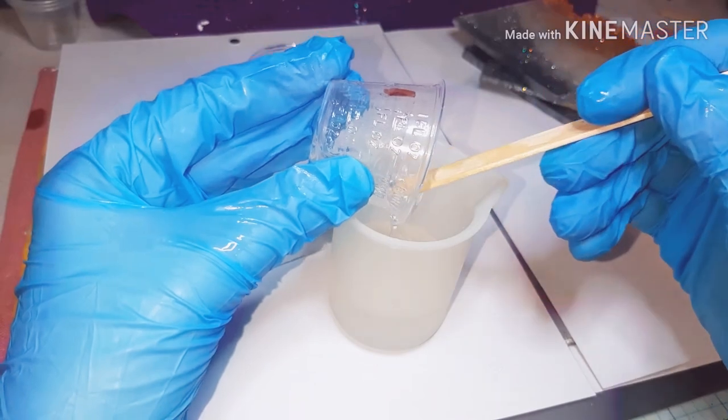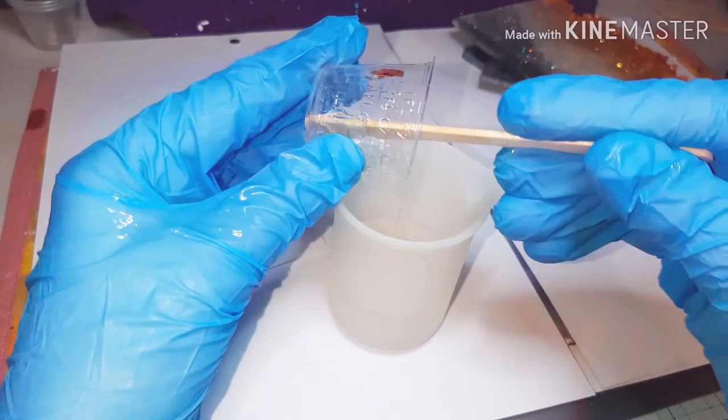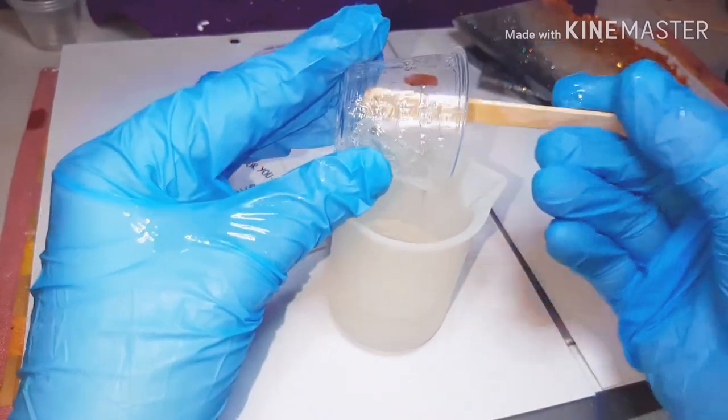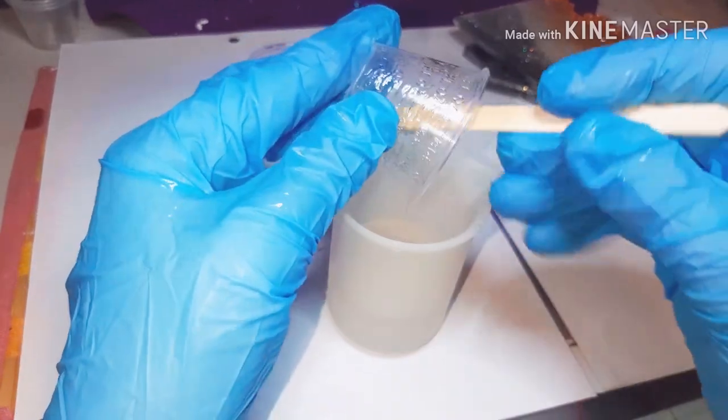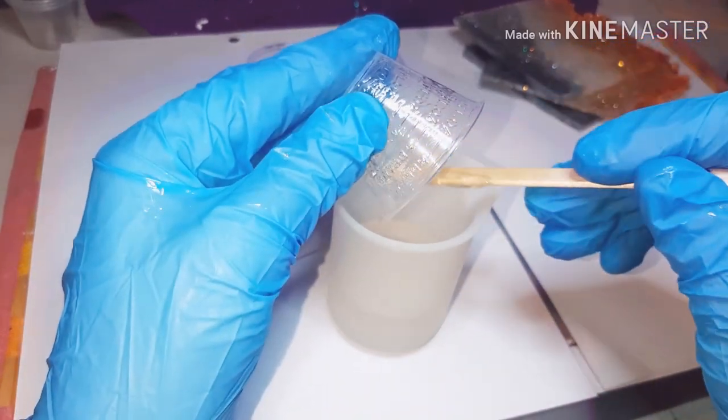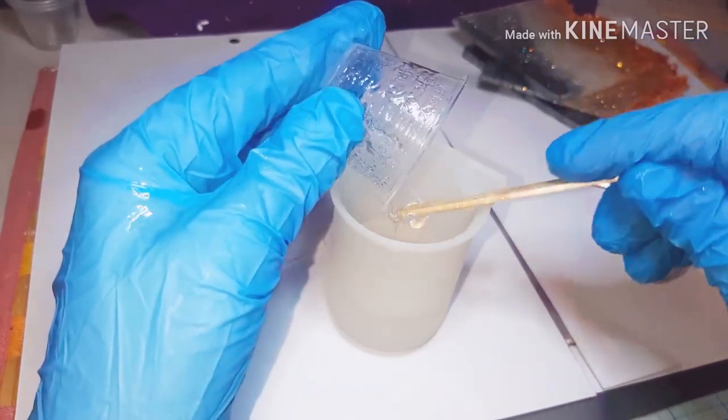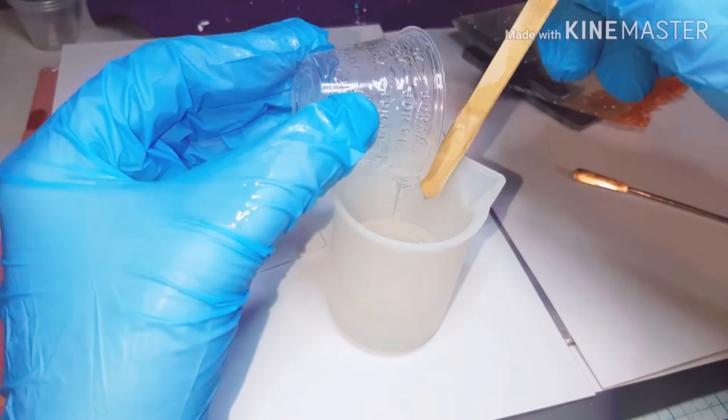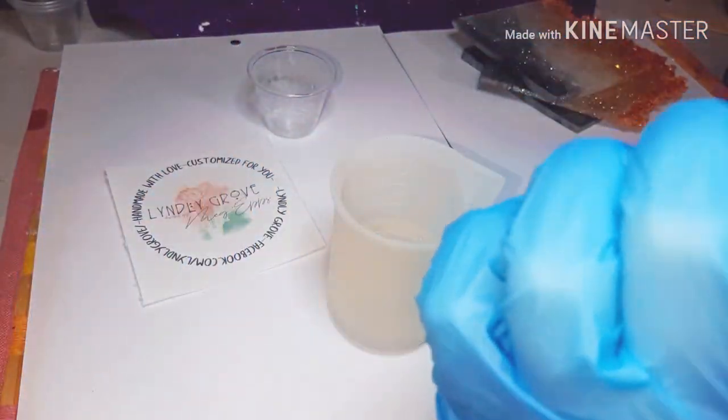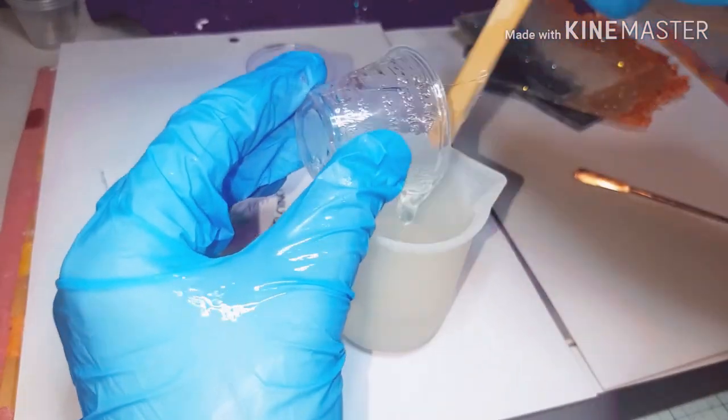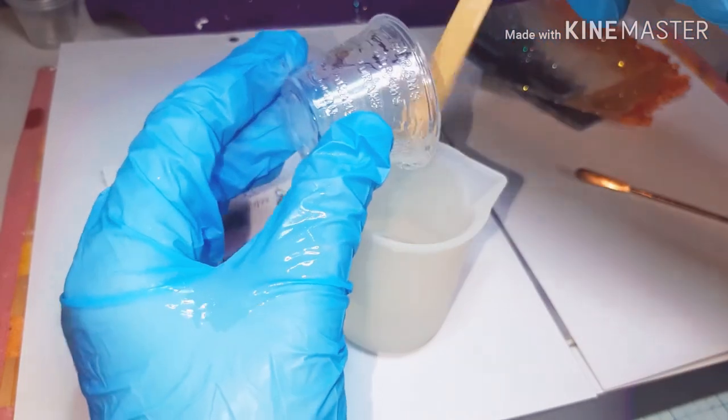Even once you pour it into the medicine cups, the only thing I do is you can see I mark my part A medicine cup that I'm going to use. I just mark it with a Sharpie. That way I never get them confused. And because there's been times where I have done my part A first and then my part B and not that it like makes a huge difference. I just feel like I get less bubbles when I do it part B part A way. That's a lot of part A's and part B's in one sentence.